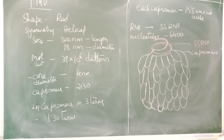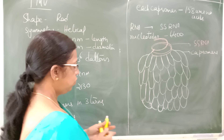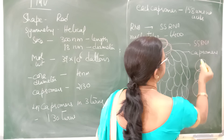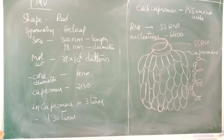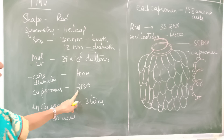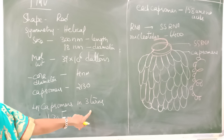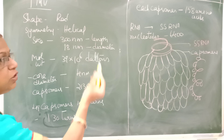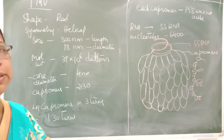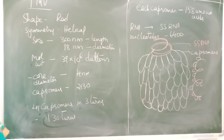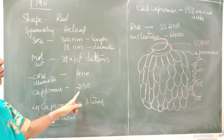The total number of capsomers is 2130, and 49 capsomers are present in every 3 turns, giving a total of 130 turns. Each capsomer has 158 amino acids. The genetic material is single-stranded RNA containing 6400 nucleotides. This gives a ratio of nucleotides to capsomers of 3 to 1.